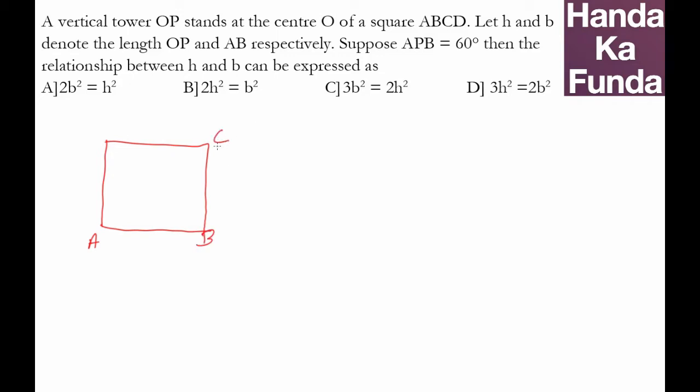At the center there is a vertical tower OP. So if I look at the top view, this is O and a tower is standing here. Now H and B are the length of OP and AB respectively.